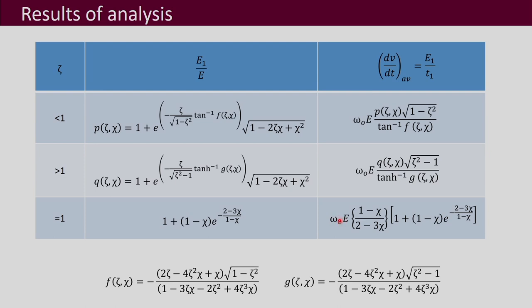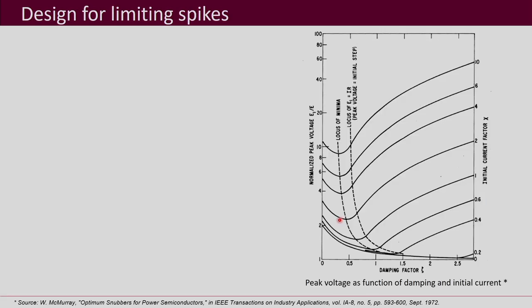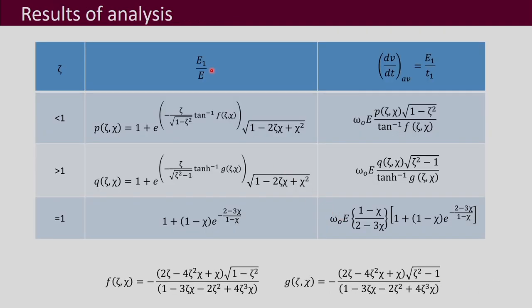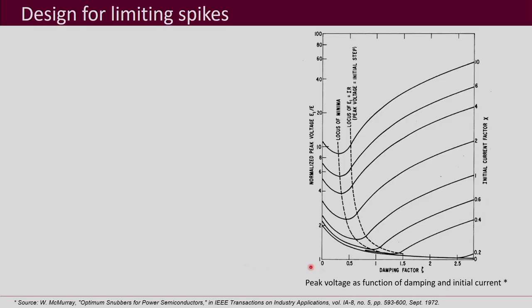This is the summary of the results obtained. Now, we can do the snubber design in two ways: one is to have the objective of limiting the spike voltage — the peak voltage E1. For that, we use these equations and plot the functions with respect to the damping factor zeta, with chi as the parameter.